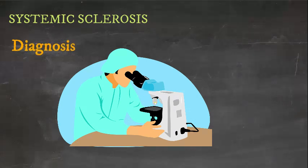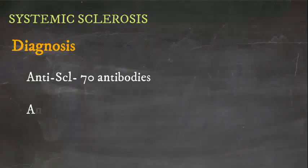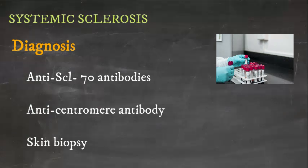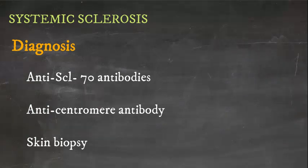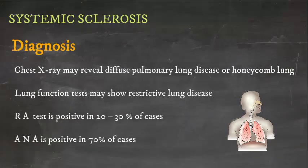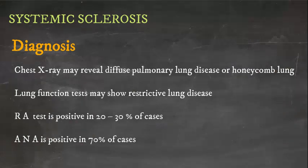Diagnosis is clinical and based on the presence of autoantibodies, including anti-SCL-70 antibodies and anti-centromere antibody. A skin biopsy may be performed to confirm the diagnosis. Chest X-ray may reveal diffuse pulmonary lung disease or honeycomb lung. Lung function tests may show restrictive lung disease. RA test is positive in 20-30% of cases, and ANA is positive in 70% of cases.